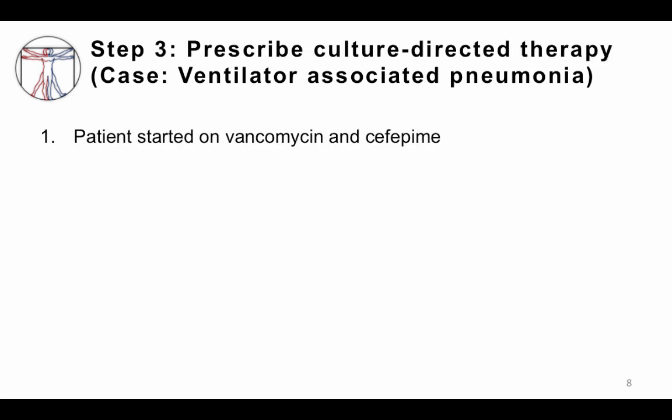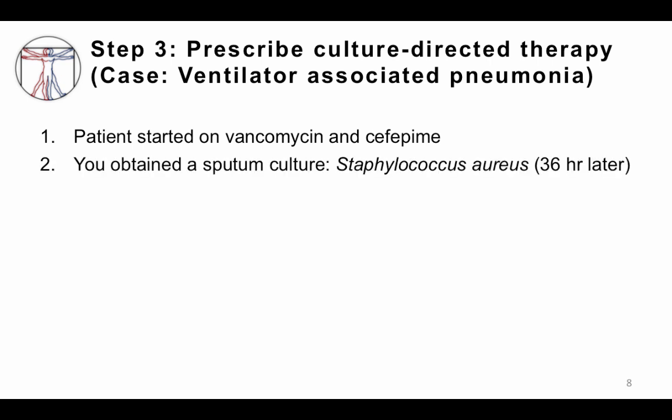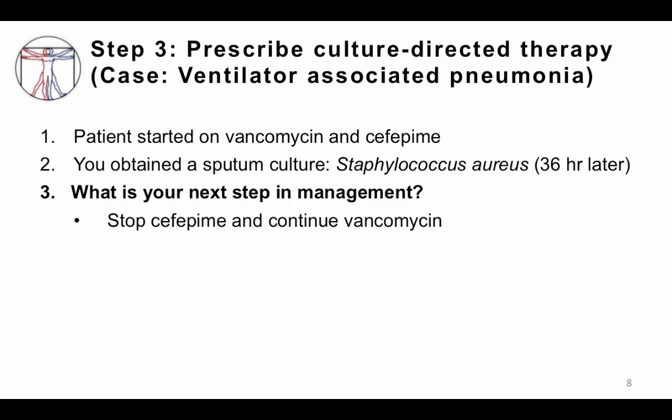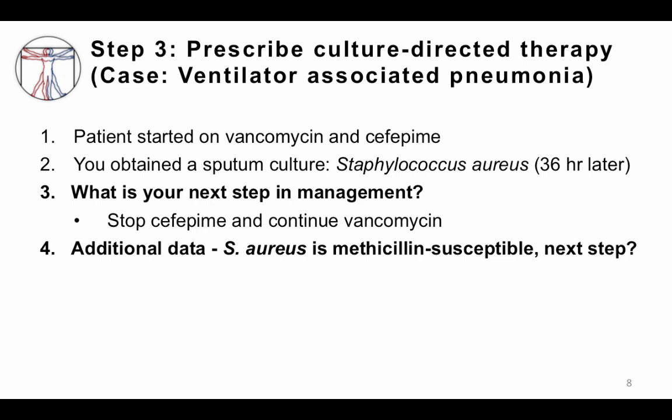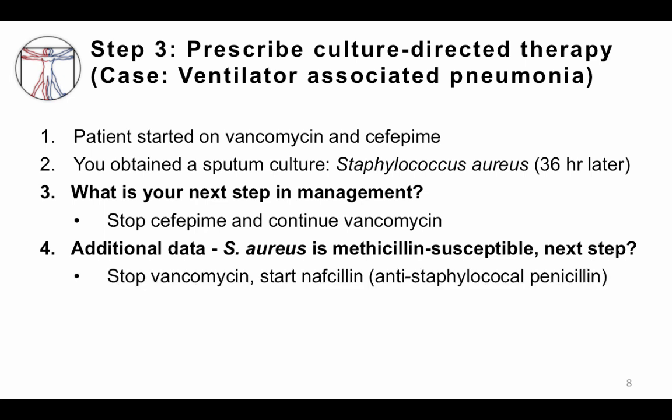The empiric regimen selected is vancomycin plus cefepime — vancomycin to cover potential MRSA and cefepime to cover potential Pseudomonas and other gram-negatives. A sputum culture is obtained and Staphylococcus aureus grows 36 hours later. Cefepime can be stopped since no gram-negative organism is seen, and vancomycin is continued. When susceptibilities return showing methicillin-susceptible Staphylococcus aureus, we can narrow further — stopping vancomycin and switching to an anti-staphylococcal penicillin like nafcillin, which is actually more active than vancomycin for MSSA and associated with better outcomes. A treatment course of approximately 10 days is then completed.